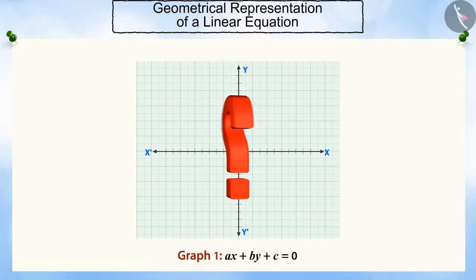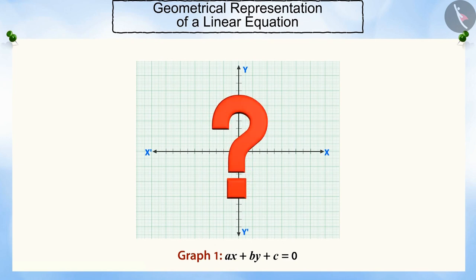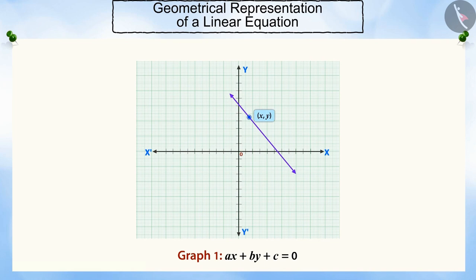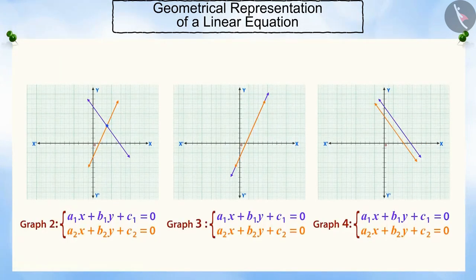Can you tell me, what is the geometrical representation of a linear equation in two variables? Absolutely right — this is a straight line. Each solution of this linear equation is a point on the line denoting the equation. So, we can say that a pair of linear equations in two variables will denote a combination of straight lines in geometrical form.